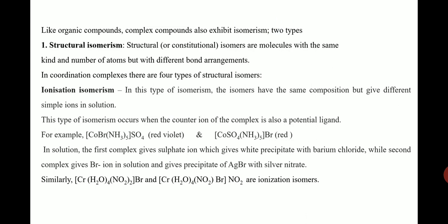Consider ionization isomerism. In this type, the isomers have the same composition but give different simple ions in solution. This type of isomerism is exhibited by complexes containing counter ions that are potential ligands. For example, in the first complex sulfate is the counter ion, and in the second complex bromine is the counter ion.